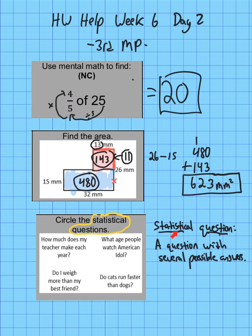Let me go through here and decide how many answers each question has. First question: how much does my teacher make each year? Well, there's only one answer to that because your teacher makes a certain amount of money, probably not too much, so that's not a statistical question. Let's go down to this one: do I weigh more than my best friend? Well, that's either a yes or no question, so that's not a statistical question.